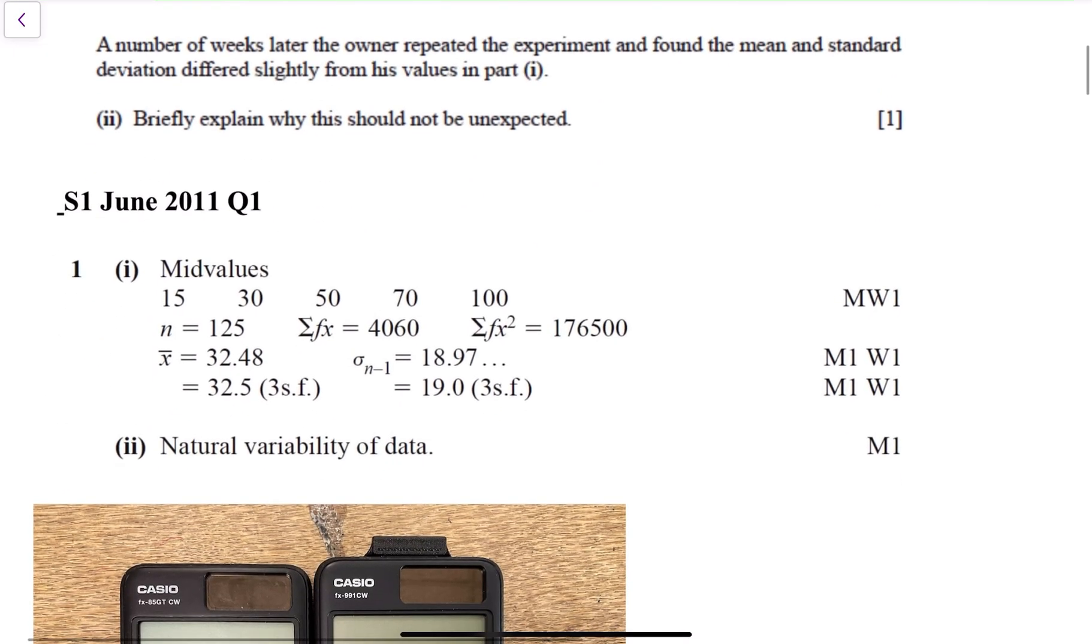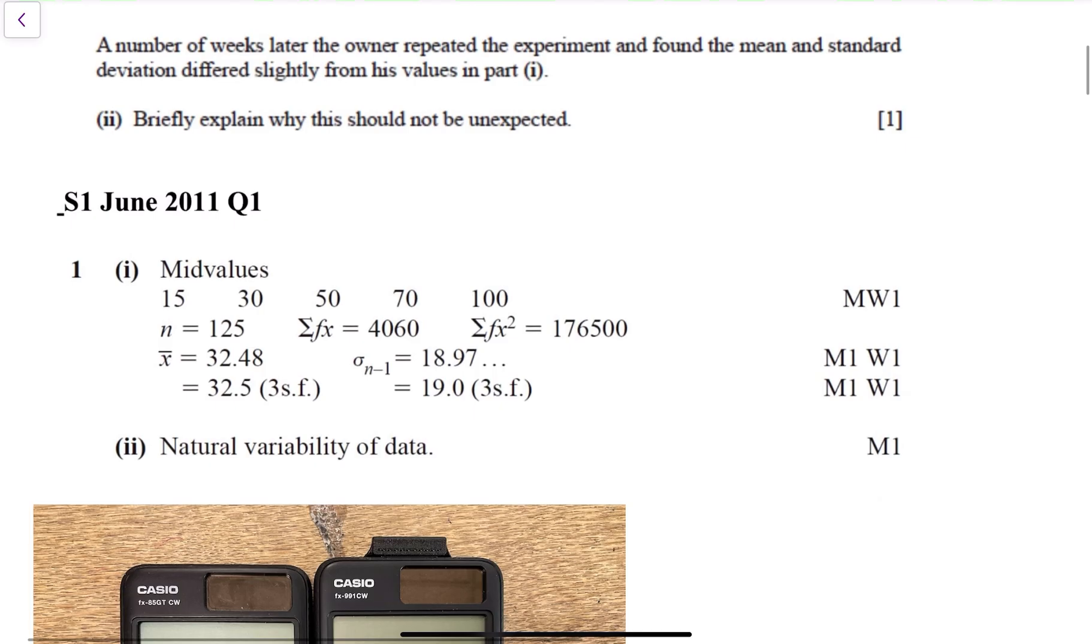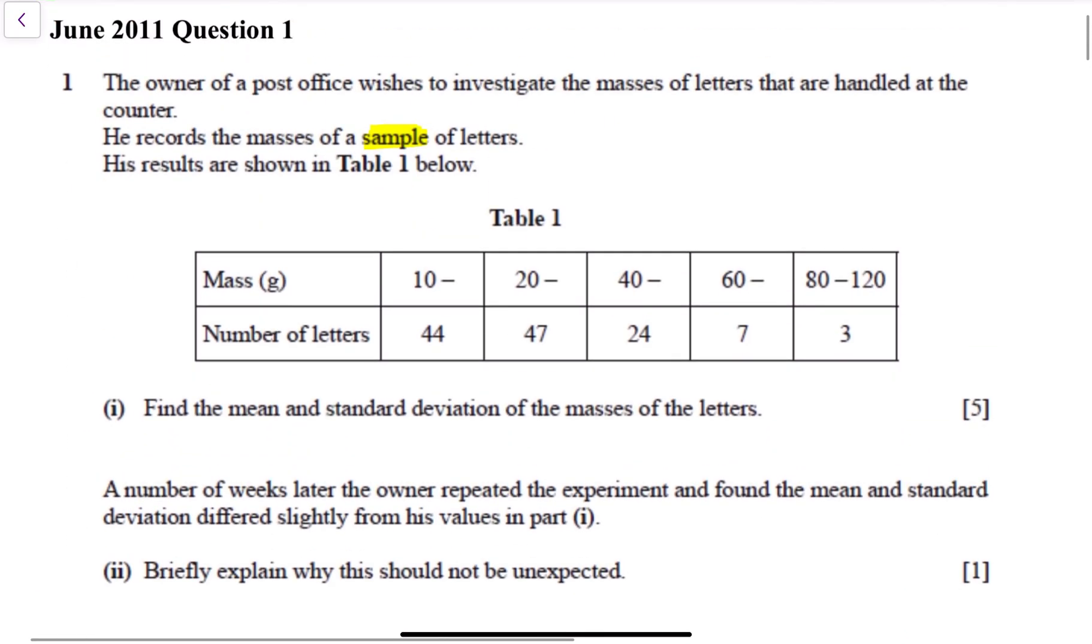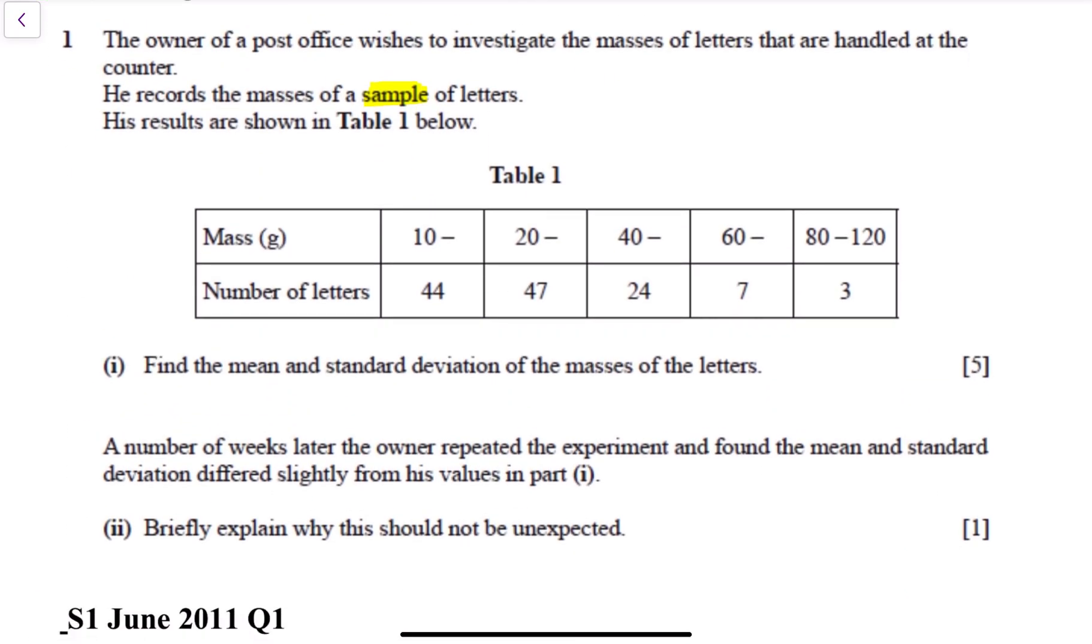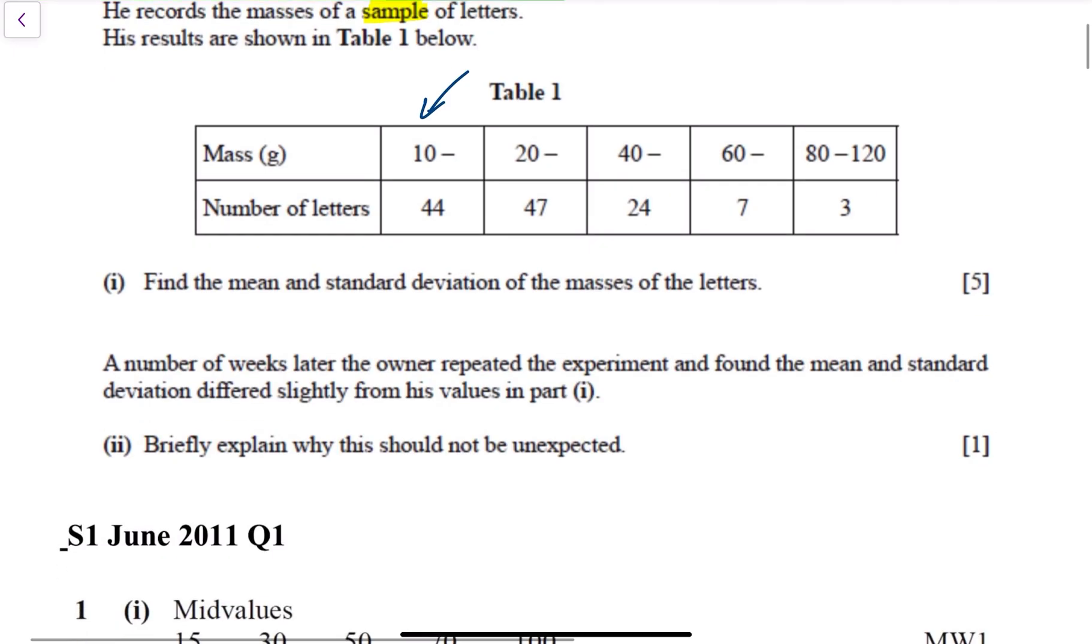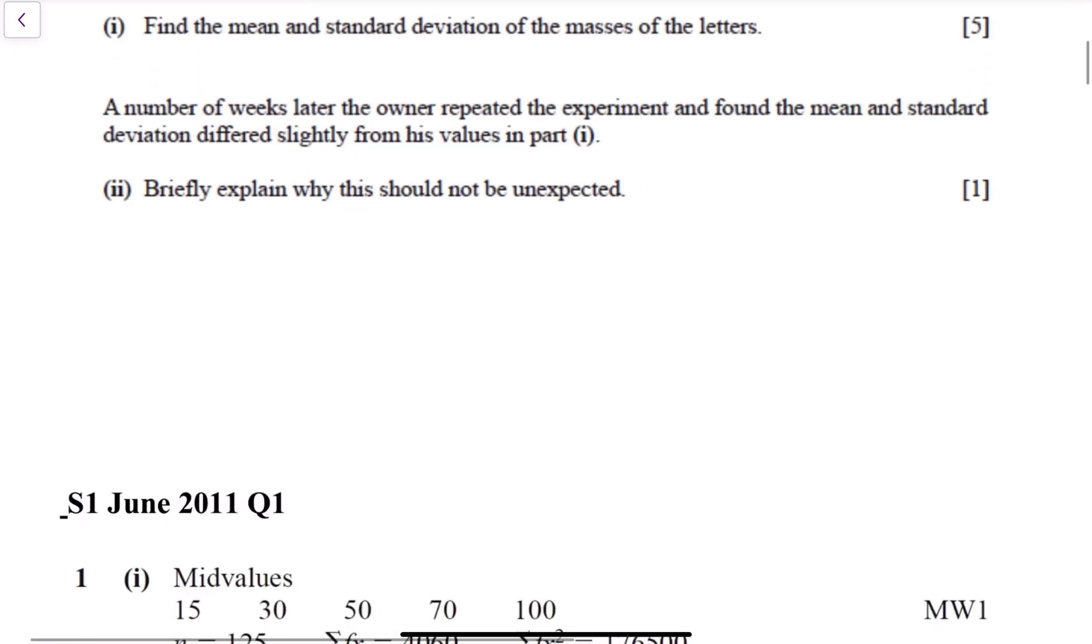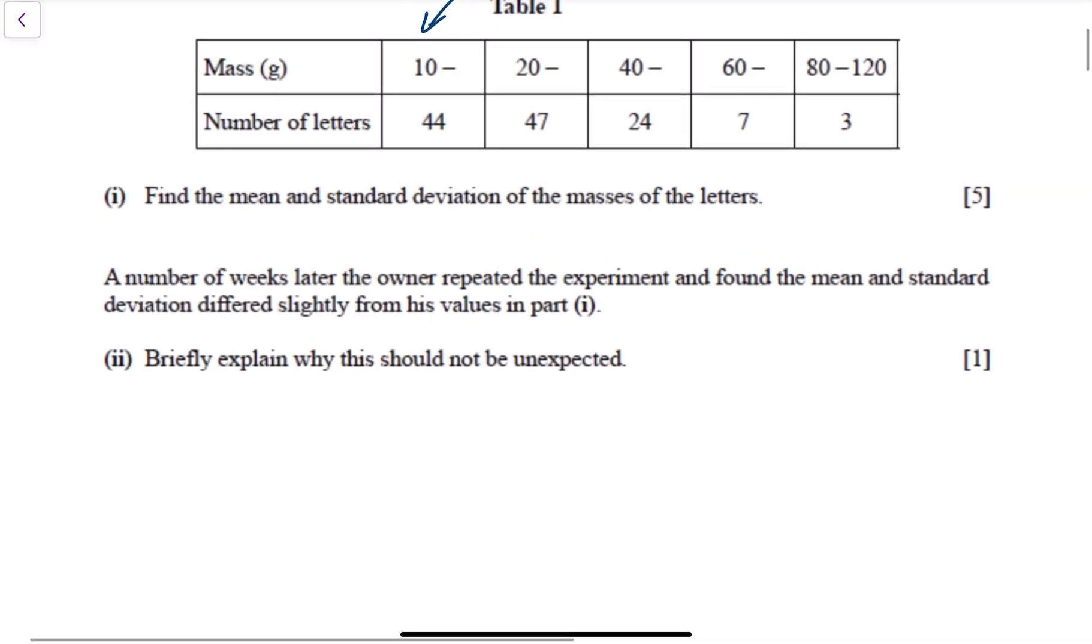Now here is the mark scheme. First thing you want to get a mark is for finding the mid values. We have to find the mid values because the masses of the first 44 letters are somewhere between 10 and the next interval. I wouldn't really do this working out if I'm quite honest.